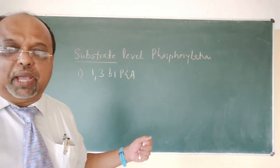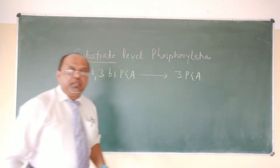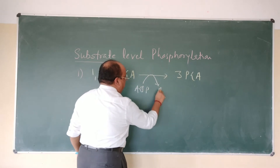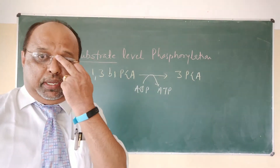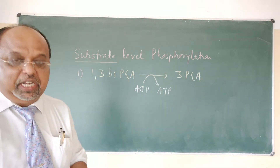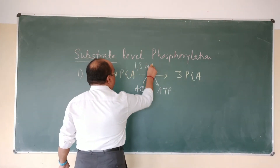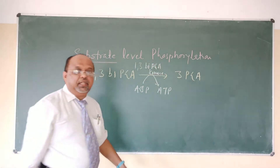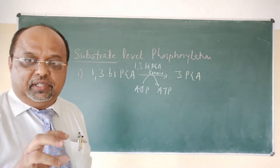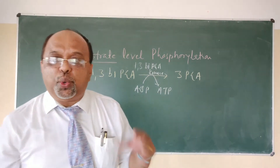1,3-biphosphoglycerate (1,3-BPG) is converted to 3-phosphoglycerate (3-PGA). During this reaction, ADP is converted into ATP. This reaction is catalyzed by 1,3-biphosphoglycerate kinase. During the conversion of ADP to ATP, the high-energy phosphate group is linked to ADP — so who is the high-energy phosphate group donor?